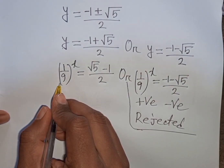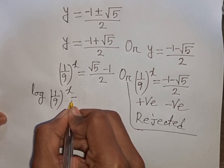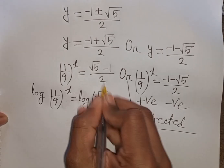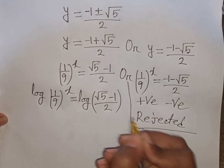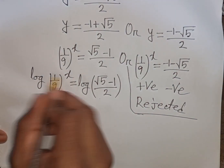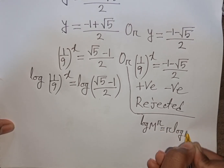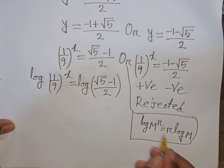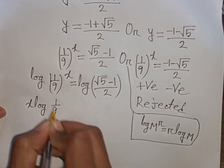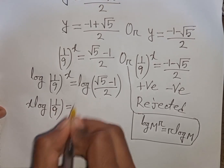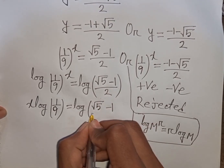Taking log of both sides: log[(1/9)^x] = log[(√5 − 1)/2]. Bringing the power x to the front, we get x · log(1/9) = log[(√5 − 1)/2].